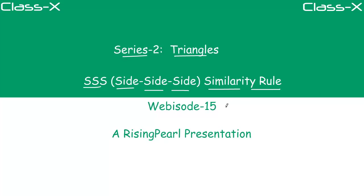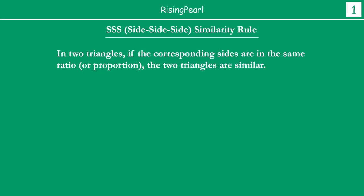As you know from webisodes 13 and 14, the last two webisodes we have been exploring similarity rules. So today's topic is the Side Side Side Similarity Rule. What is meant by the SSS Similarity Rule? In two triangles, if the corresponding sides are in the same ratio or proportion, the two triangles are similar.